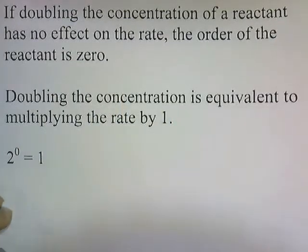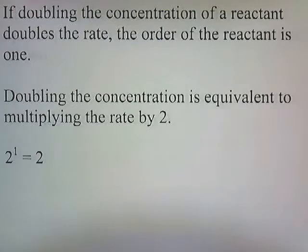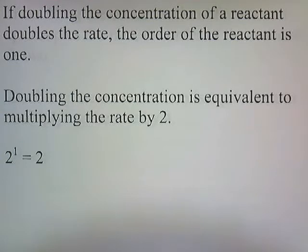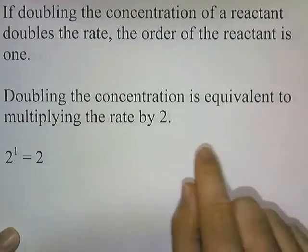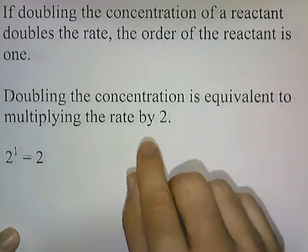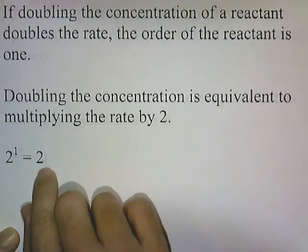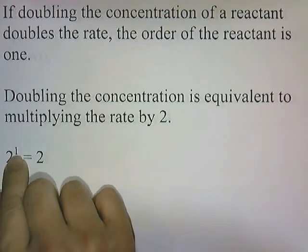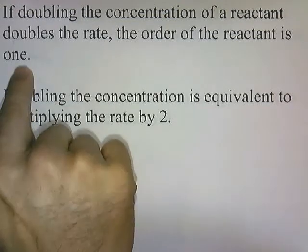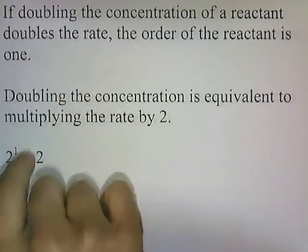Here's another concept. If doubling the concentration of a reactant doubles the rate, the order of the reaction is 1. We've doubled the concentration of the reactant, the rate increases by a factor of 2, and 2 is the same as 2 to the 1 — so that's why it's a first order reaction.